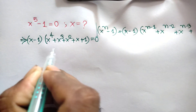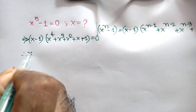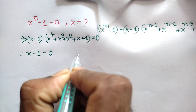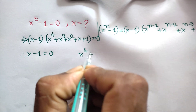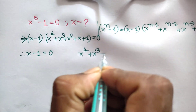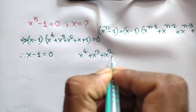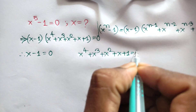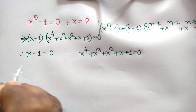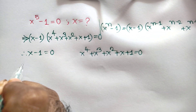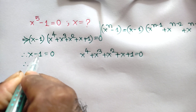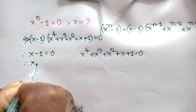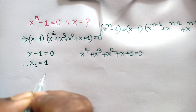There are two cases. We can write here x minus 1 is equal to 0, and x to the power 4 plus x cubed plus x squared plus x plus 1 is equal to 0. Taking the negative 1 to the right side, we will get the first value x₁ is equal to 1.